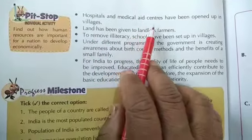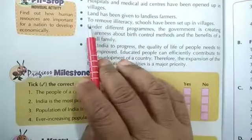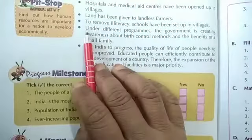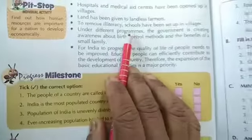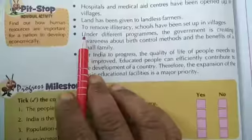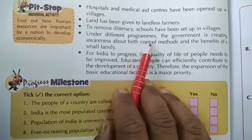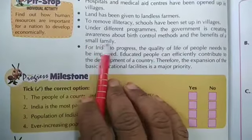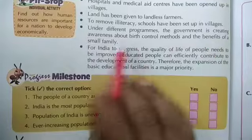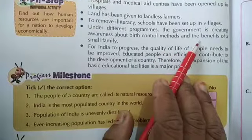Hospitals and medical aid centers have been opened up in villages. Land has been given to landless farmers — bhoomihin kisaanon ko zameen di jaayegi. And to remove illiteracy, schools have been set up in villages. Under different programs, the government is creating awareness about birth control methods — janm ko control karne ki suwidhaon ke baare mein — and the benefits of a small family.